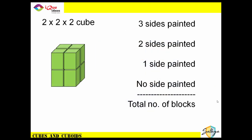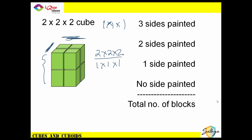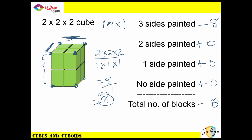Now let's say there is a 2x2x2 cube, with length, height and width each two units. If I cut it into 1x1x1 cubes, how many will have three, two, one or no sides painted? Total blocks: 2×2×2 divided by 1×1×1 equals eight blocks. Since there are eight original vertices, all eight blocks will have three sides painted. All blocks are accounted for, so there are no blocks with two, one, or zero painted sides.